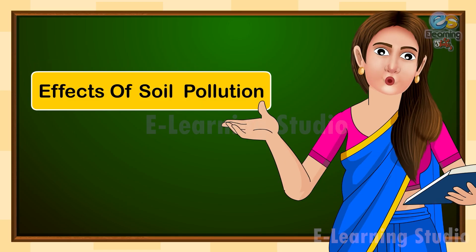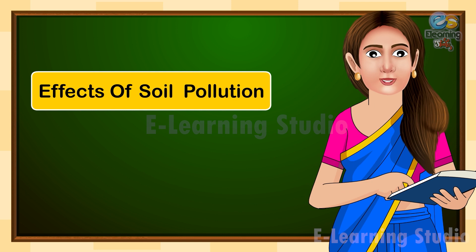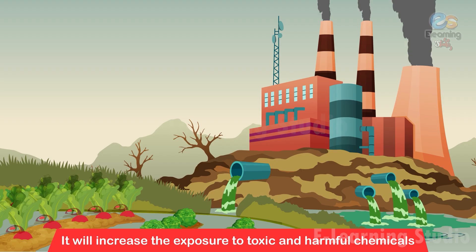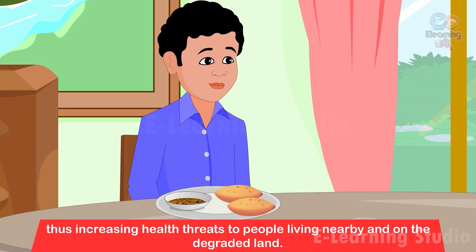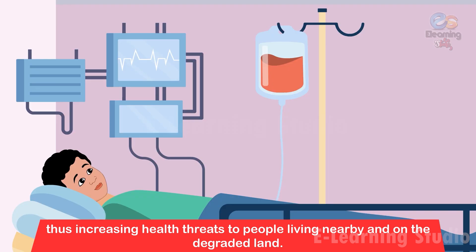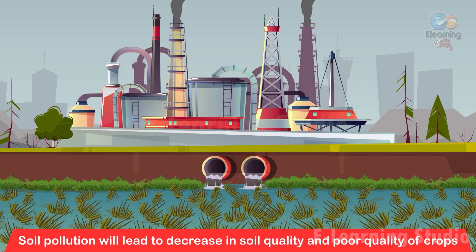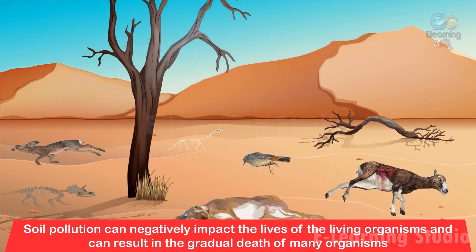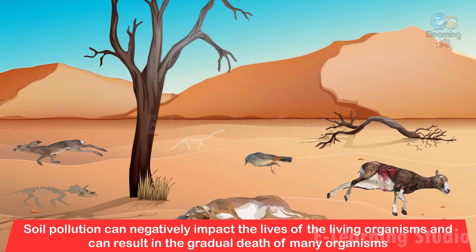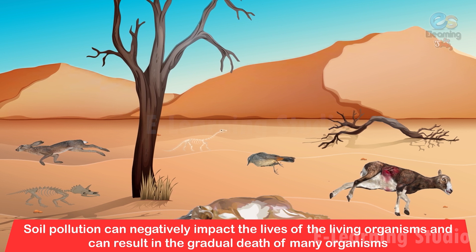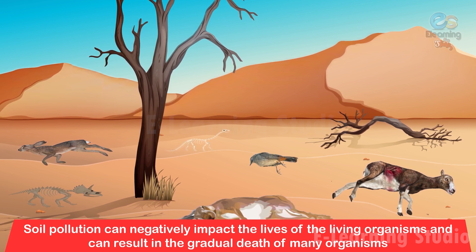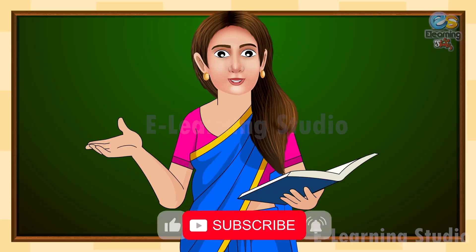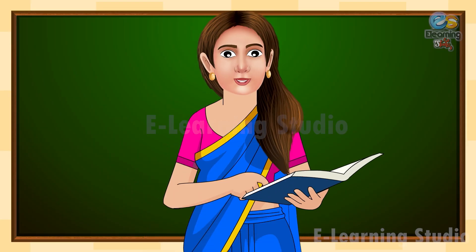Children, let us know about some effects of soil pollution. 1. It will increase the exposure to toxic and harmful chemicals, thus increasing health threats to people living nearby and on the degraded land. 2. Soil pollution will lead to decrease in soil quality and poor quality of crops. 3. Soil pollution can negatively impact the lives of living organisms and can result in the gradual death of many organisms. Hope this is clear to all. Thank you and happy learning!